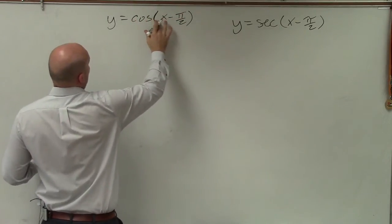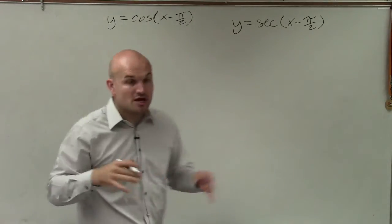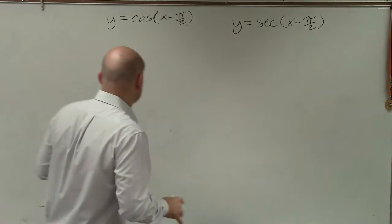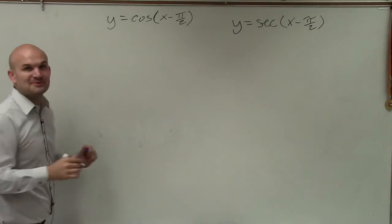So we're going to graph y equals cosine of x minus pi halves. And to graph any of our trigonometric functions, we need to be able to find the basic information. So let's go through all the basic information.